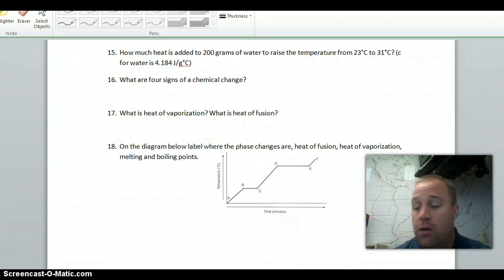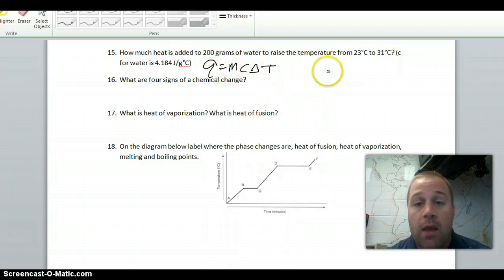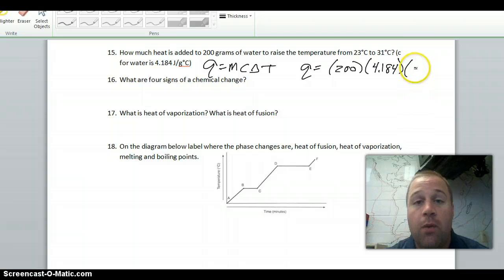For number 15, you're going to use Q equals mc delta T. In this problem, you're looking for how much heat, so you're looking for Q. The mass is 200. The C value is 4.184. And the change in temperature is 31 minus 23, which is 8. When you multiply those out, you get 6694.4 joules.